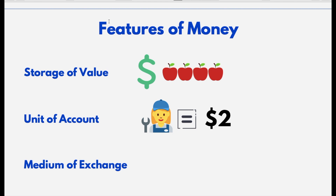The second characteristic is unit of account, and the third is medium of exchange — let's discuss these together. Unit of account means if someone provides a service, we are able to quantify that service in value terms and compare it across other services. For example, a plumber's service is worth $2, which tells us the plumber service is worth $2. When someone provides you a service, you need to pay them back — that's the concept of quid pro quo. If they require a service you don't have, you won't be able to benefit from their resource.